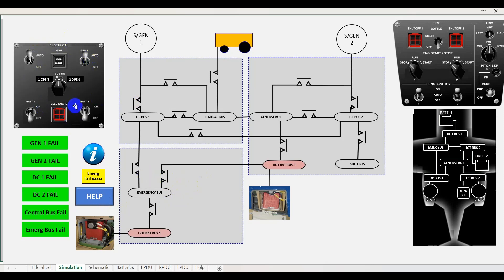On the left hand side, we've got our electrical panel just as it would be in the aircraft. Here from the center console, we've got our engine starting panel, and below that we've got the synoptic page that you can access on the center screen of the cockpit.